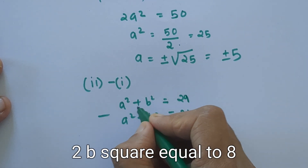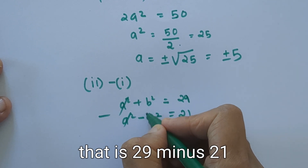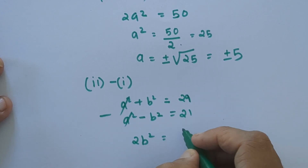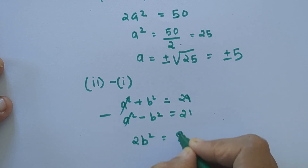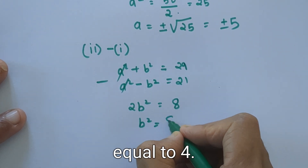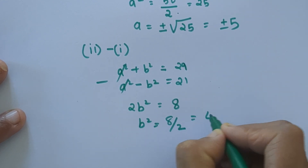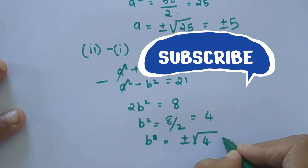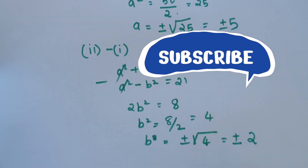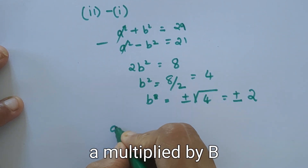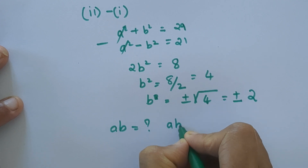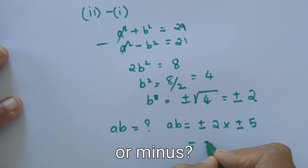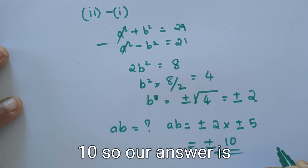We get 2b squared equals 8, since 29 minus 21 equals 8. So b squared equals 8 divided by 2, which equals 4. Therefore b equals plus or minus 2. Next we find a times b, which equals plus or minus 5 times plus or minus 2, which equals plus or minus 10. So our answer is plus or minus 10.